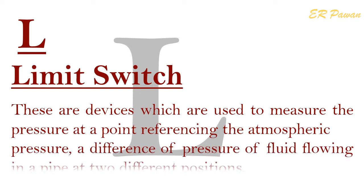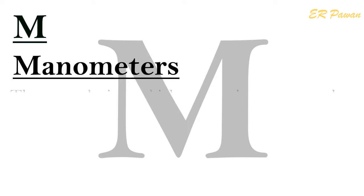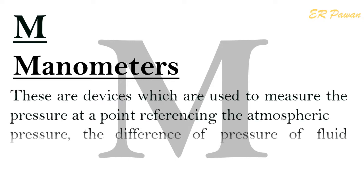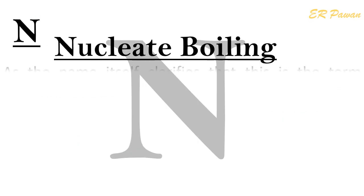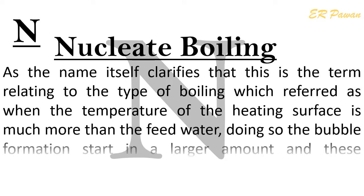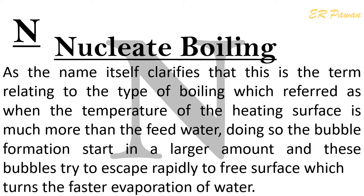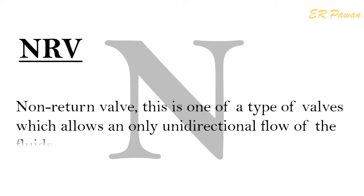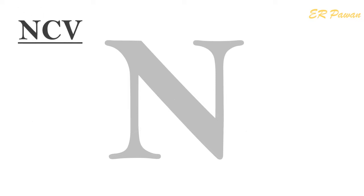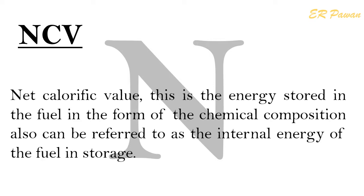L — Limit Switch / M — Manometers: These are devices which are used to measure the pressure at a point referencing the atmospheric pressure, or the difference of pressure of fluid flowing in a pipe at two different positions. N — Nucleate Boiling: This term relates to a type of boiling where the temperature of the heating surface is much higher than the feed water temperature, causing bubble formation in large amounts. These bubbles try to escape rapidly to the free surface, resulting in faster evaporation of water. Non-Return Valve (NRV): A type of valve which allows only unidirectional flow of fluids. Net Calorific Value (NCV): This is the energy stored in the fuel in the form of chemical composition, also referred to as the internal energy of the fuel in storage.